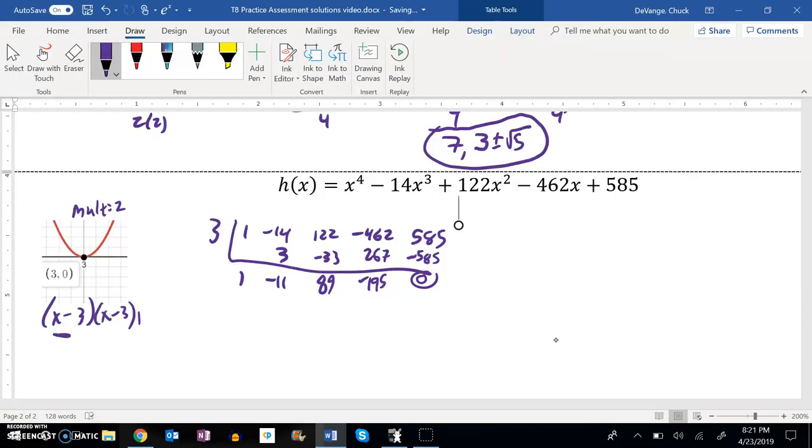So I've taken out one of the 3's, let me take out the other one. So I'll do it again. 1, 3, negative 11 plus 3 is negative 8, multiply that by 3, negative 24,